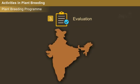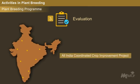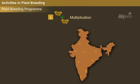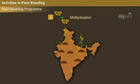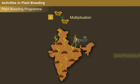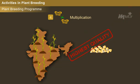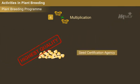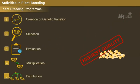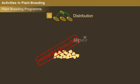In India, evaluation is conducted at several locations under the control of All-India Coordinated Crop Improvement Projects. During the multiplication activity, large-scale production of the newly released seeds is carried out by seed producing agencies. Later on, the produced seeds are certified by the respective seed certification agency.